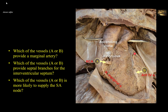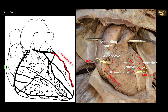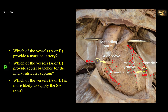B is the anterior interventricular artery, located in the anterior interventricular groove between the right and left ventricles. It supplies septal branches that dip immediately into the interventricular septum. It also supplies small ventricular branches to the right ventricle, which is mainly supplied by the right coronary artery, and diagonal branches to the left ventricle. The left marginal artery, lying on the obtuse border of the heart, is derived from the circumflex branch of the left coronary artery, not from the anterior interventricular artery. Therefore, it is only A that provides a marginal artery — the right marginal artery.